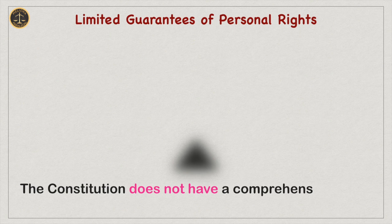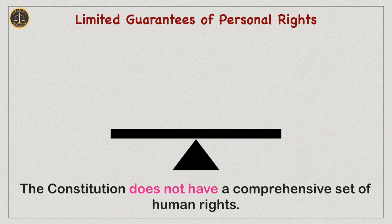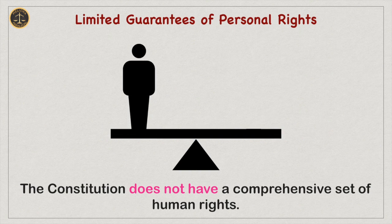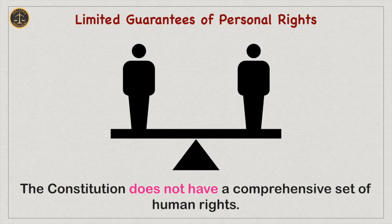Next, Limited Guarantees of Personal Rights. The Australian Constitution doesn't have a comprehensive set of human rights. However, since the 1990s, the High Court has been attempting to develop a so-called jurisprudence of rights, which are said to be implied in the text and structure of the Australian Constitution.